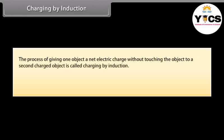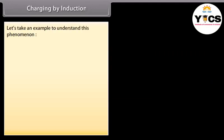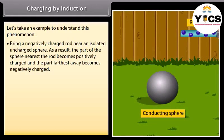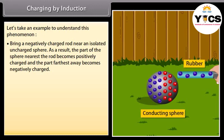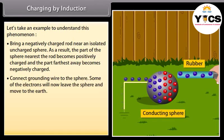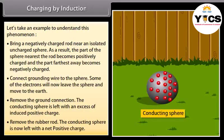Charging by induction: The process of giving one object a net electric charge without touching it to a second charged object is called charging by induction. When a conductor is connected to the earth by a conducting wire, it is said to be grounded or earthed. For example, bring a negatively charged rod near an isolated uncharged sphere; the part nearest the rod becomes positively charged and the part farthest away becomes negatively charged. Connect a grounding wire — some electrons leave the sphere to the earth. Remove the ground connection; the sphere is left with an excess of induced positive charge. Remove the rod; the sphere is now left with a net positive charge.